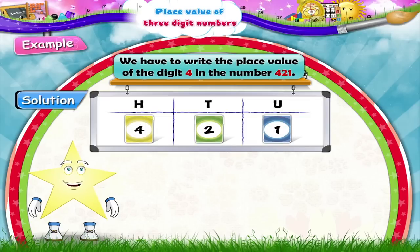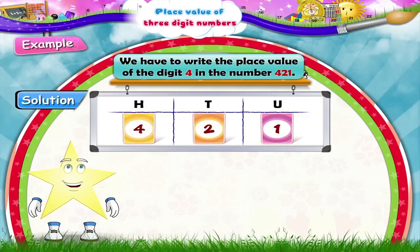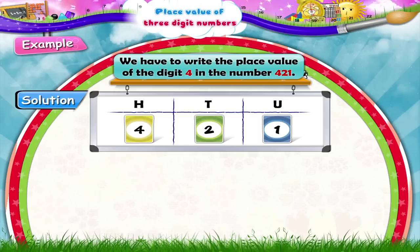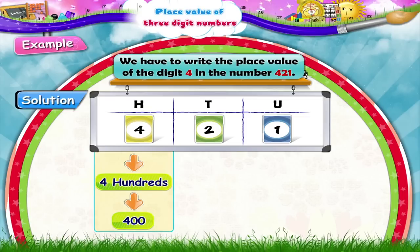A group of numbers is given here. We have to observe the numbers and answer the questions. Let us read the first question. We have to write the place value of the digit four in the number four hundred and twenty-one. In which place is the digit four? Digit four is in the hundreds place, so its place value is four hundred.